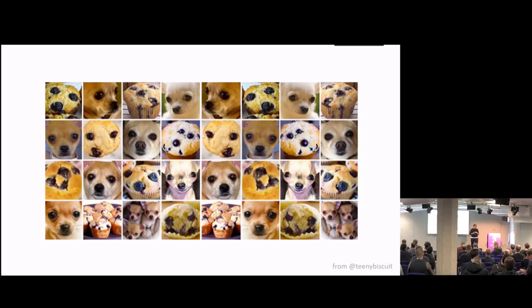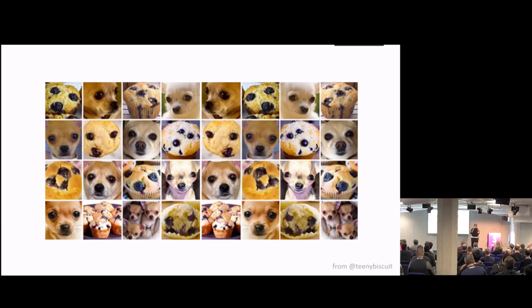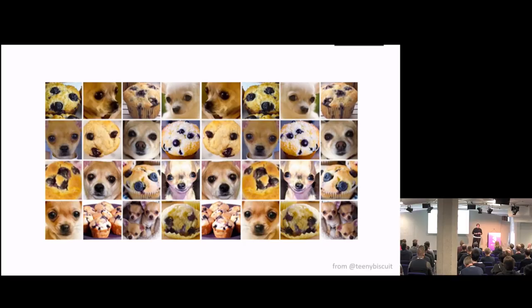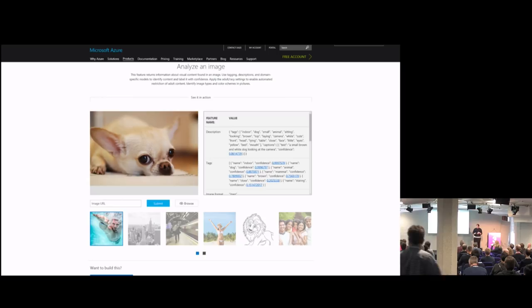One thing that humans do is draw from their experience. Instead of using heuristic rules, you send a lot of pictures of chihuahuas and say 'these are all chihuahuas', and you send a lot of pictures of muffins and say 'these are all muffins'. You use a neural network, and the neural network figures out there's a pattern in chihuahuas that's not present in muffins and distinguishes between the two. This is a problem that's already been solved — one of those ways is through Microsoft Cognitive Services.